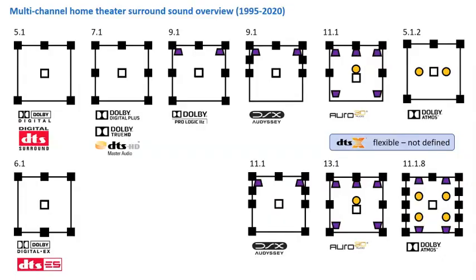For example, an Atmos movie can be down-mixed to 5.1, and a Dolby Digital movie can be up-mixed to 13 channels for a DTS-X system. On this graphic, we see many of the formats released over the past 25 years and can see the similarities.